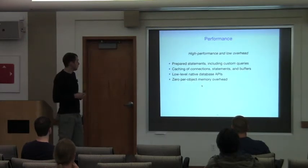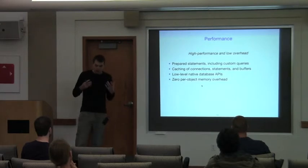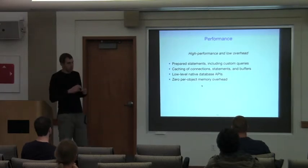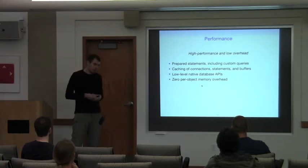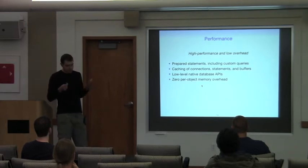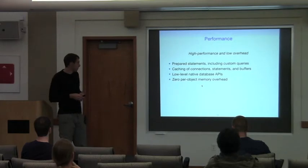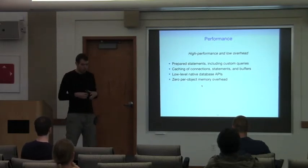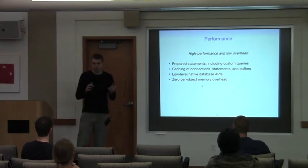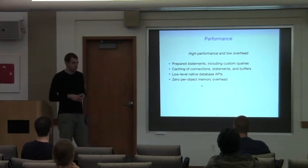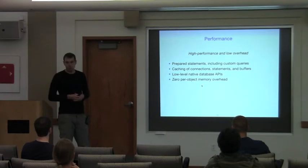ODB was designed from the ground up with high performance and low overhead in mind. In particular, it uses prepared statements throughout and caches connections, statements, and even memory buffers. When it comes to database access, ODB uses low-level native C APIs to minimize overhead and gain access to all available functionality. ODB imposes zero per-object overhead — there are no hidden special data members in your objects or special base classes. So the size of your persistent class is basically what data members you put in it.